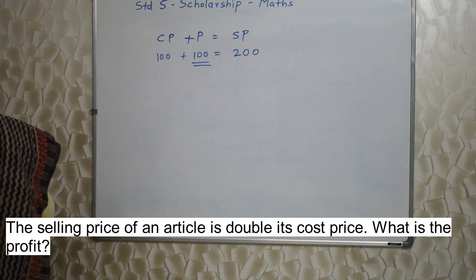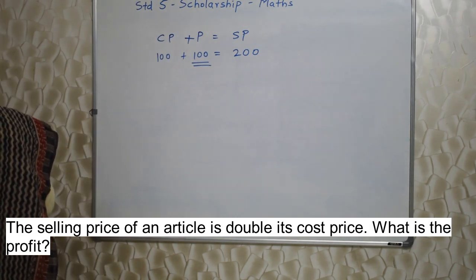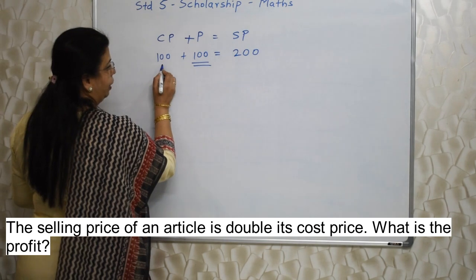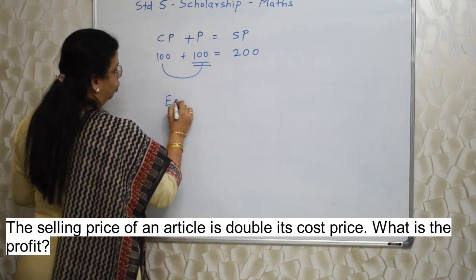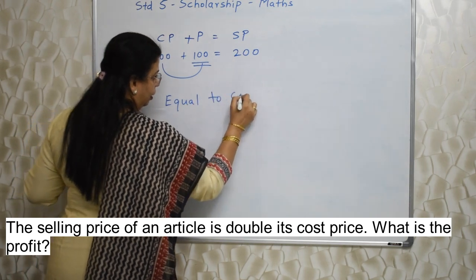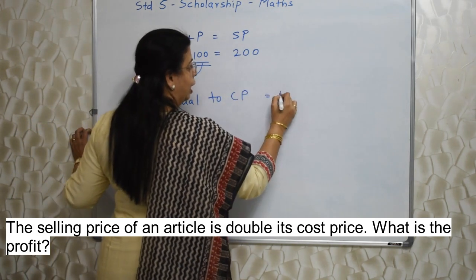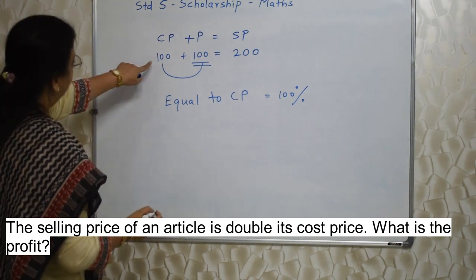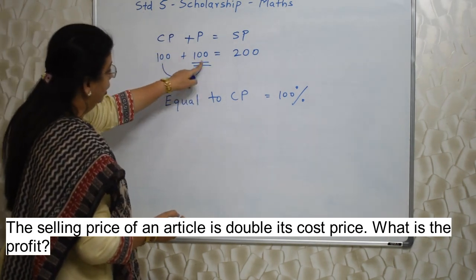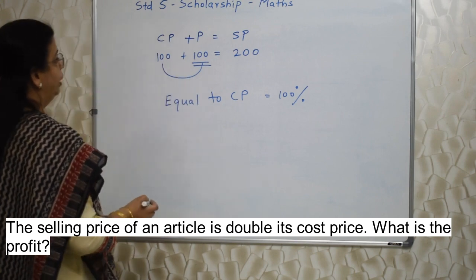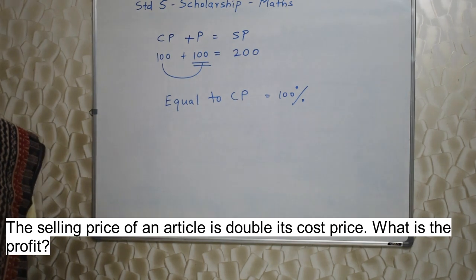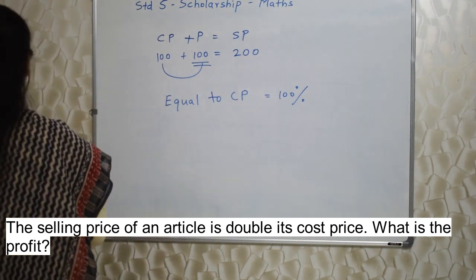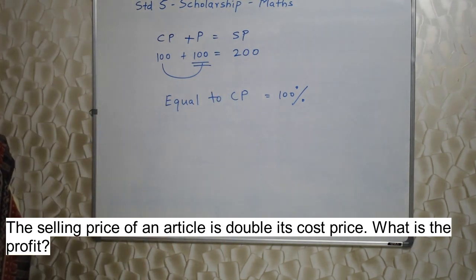We can see the profit is the same as CP — both are 100. So profit is equal to CP, and when profit equals CP it is 100% profit, because profit is always calculated on CP. CP is 100 and he is getting an additional 100, which is the same as CP. So it is 100% profit.